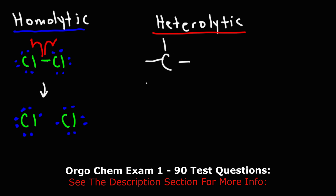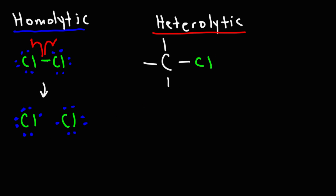Here's a good example: the carbon-chlorine bond. When the bond breaks, will the electrons go toward the chlorine atom or the carbon atom? Carbon has an electronegativity value of 2.5. Chlorine has an electronegativity value of 3.0. So chlorine is more electronegative than carbon. Chlorine is going to have the partial negative charge, and carbon is going to have the partial positive charge. So chlorine is going to have a stronger pull on the two electrons in this bond than carbon.